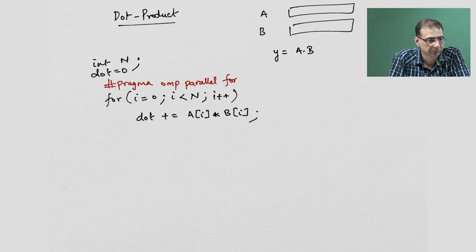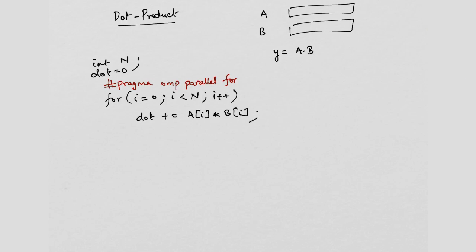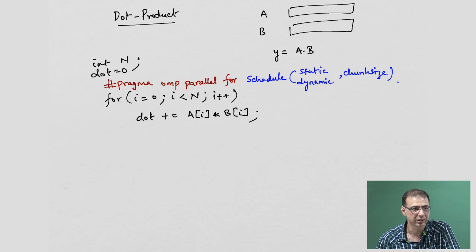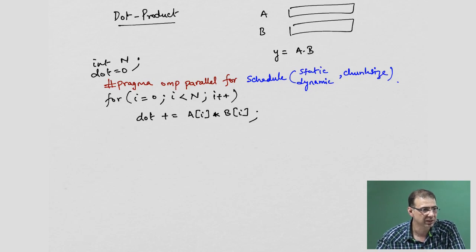You can specify how the distribution is done using the schedule clause. You can say schedule(static) or schedule(dynamic) and specify a chunk size. What static does is divide the iterations statically amongst the threads — it is not figured out at runtime, it is fixed at compile time which thread is going to do what work.